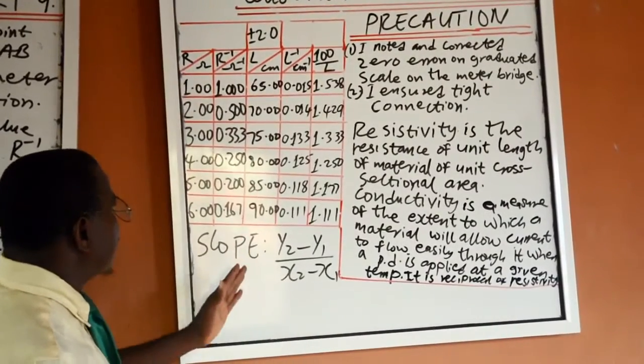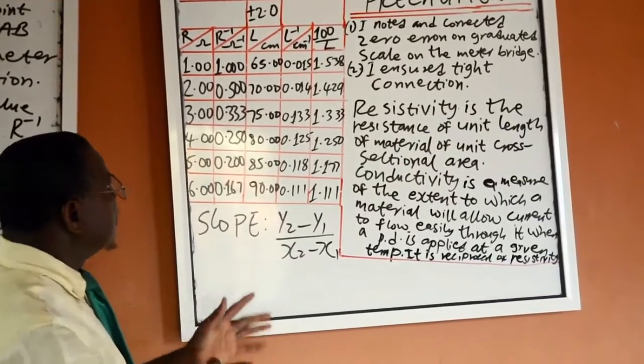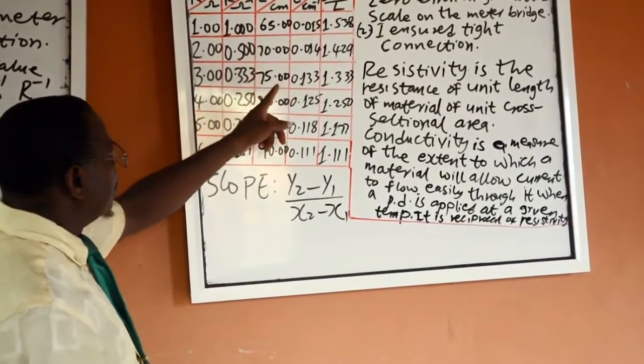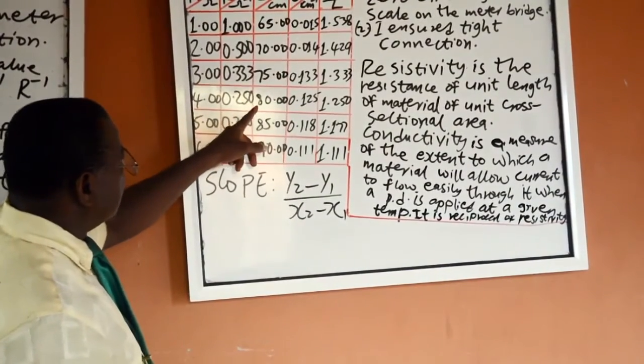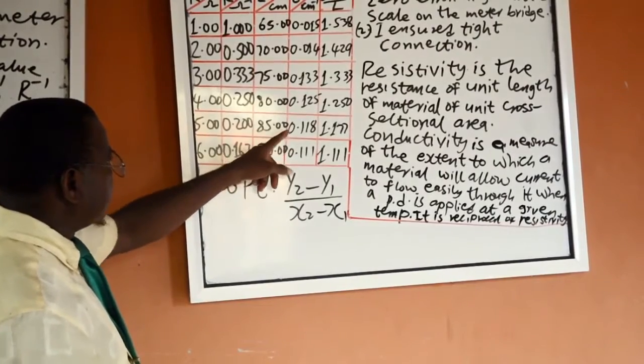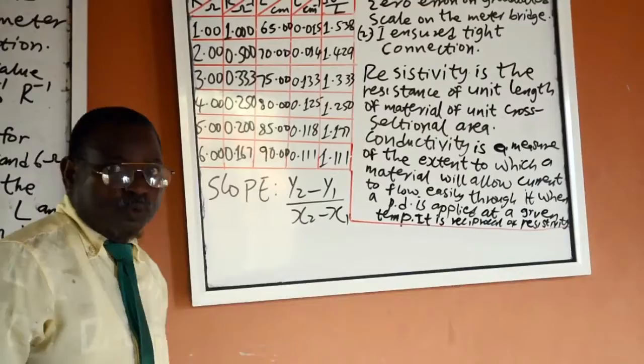So the range of values for this top column will be from 63 to 67 here, 68 to 72 here, 73 to 77 here, 78 to 82 here, 83 to 87 here, 88 to 92 here.